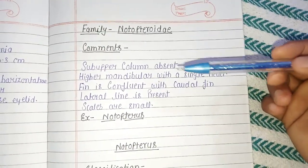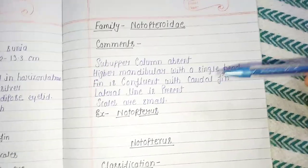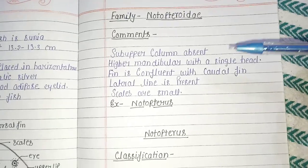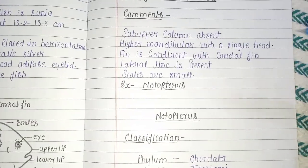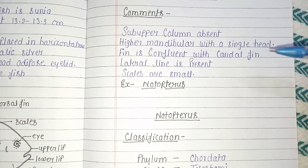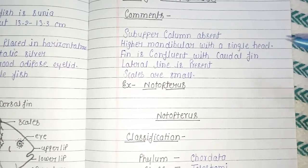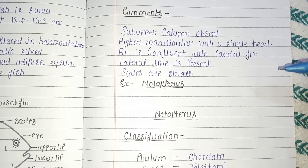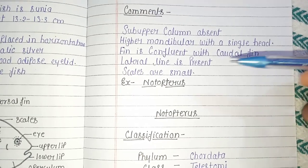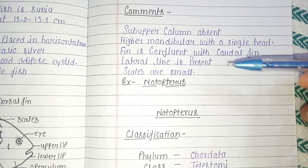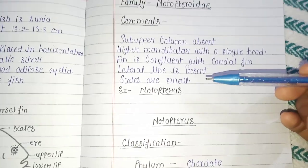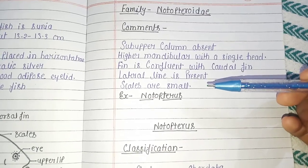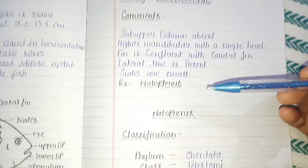Here is another family: Notopteridae. Characters: the upper column is absent, a highly developed medulla with a single head, the anal fin is confluent with the caudal fin, the lateral line is present, and scales are small. An example of family Notopteridae is Notopterus.